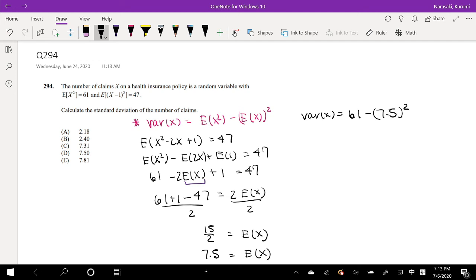But then in order to find standard deviation, we have to take the square root of both sides. So then we have standard deviation is equal to square root of 61 minus 7.5 squared. Okay, so this is equal to 2.179, which is our answer, approximately equal to 2.18, which is answer B.